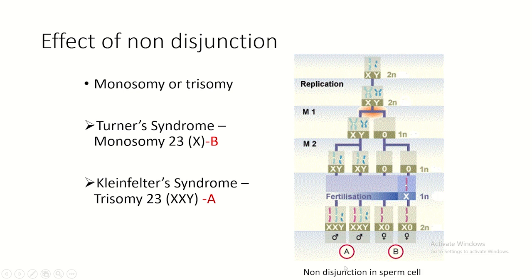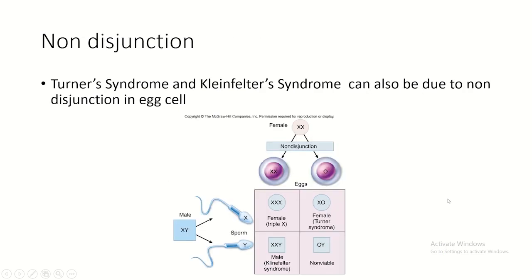Turner syndrome and Klinefelter syndrome can also occur due to non-disjunction in the ovum. In this case, one gamete has XX and the other has no gonosomes. Upon fertilization with a sperm carrying X, we get either XXX or Turner syndrome (XO). Upon fertilization with a sperm carrying Y, we get Klinefelter syndrome (XXY). A zygote with only Y is not viable.